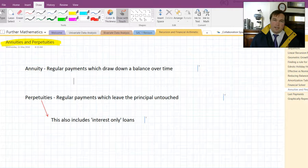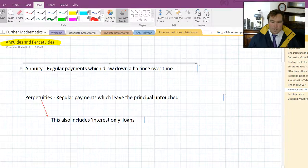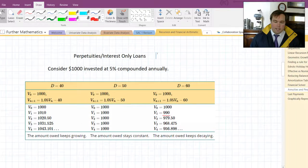A perpetuity has regular payments coming in and out but the principal remains untouched. It stays the same. This can apply to interest only loans and some investments. So for example, consider $1,000 invested at 5% compounding annually.